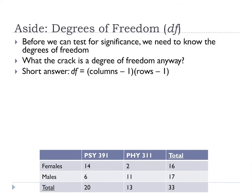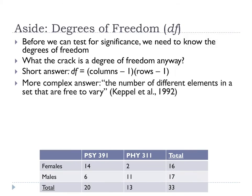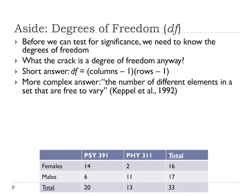Here's the more complex answer: degrees of freedom is the number of different elements in a set that are free to vary. You might be wondering what that means — and what stops an element from varying. Let me show you the different elements in a set: here's one element, two, three, four — four elements in a set. It seems like all of those could vary.